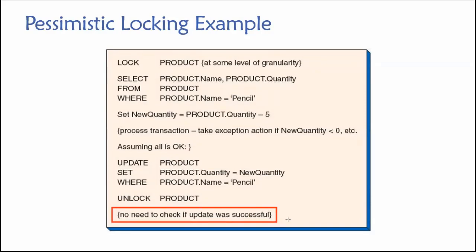We had the resource exclusively locked during that time. So as long as there wasn't some sort of disk failure or other problem, we don't need to verify that the actual value was updated as we'd expect. Remember, pessimistic locking assumes that a conflict is likely to occur, and we're going to take actions to prevent that conflict intentionally — even if ultimately it doesn't occur.